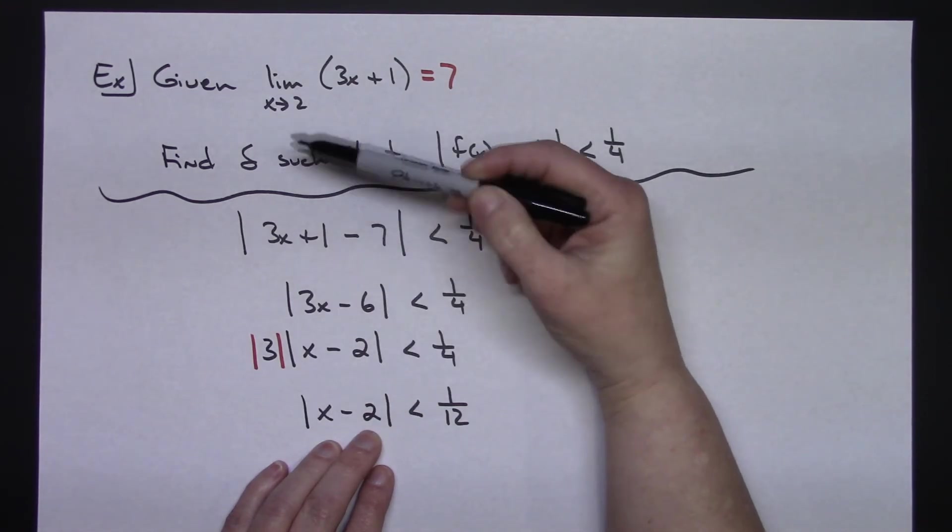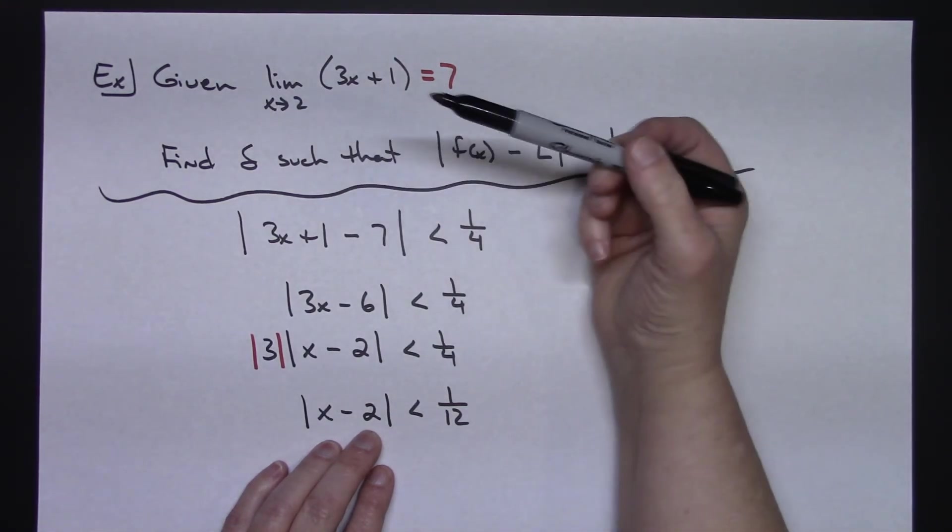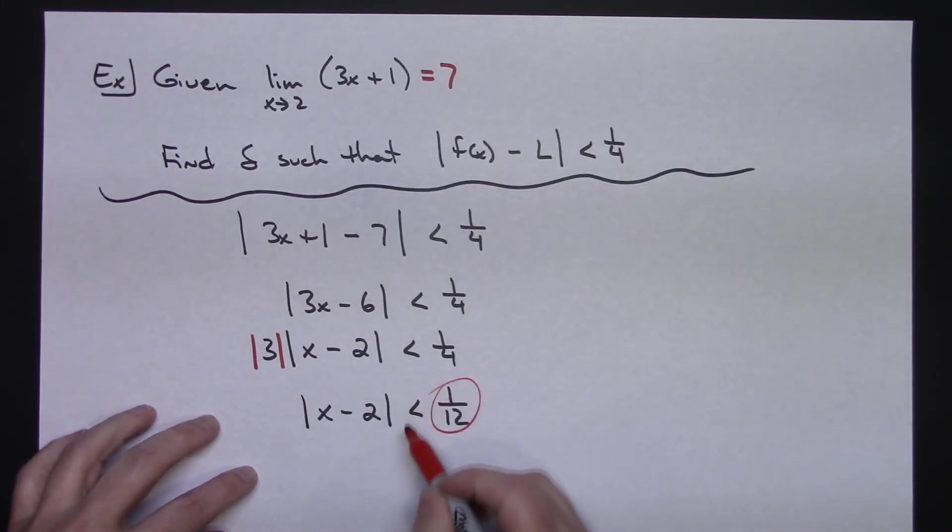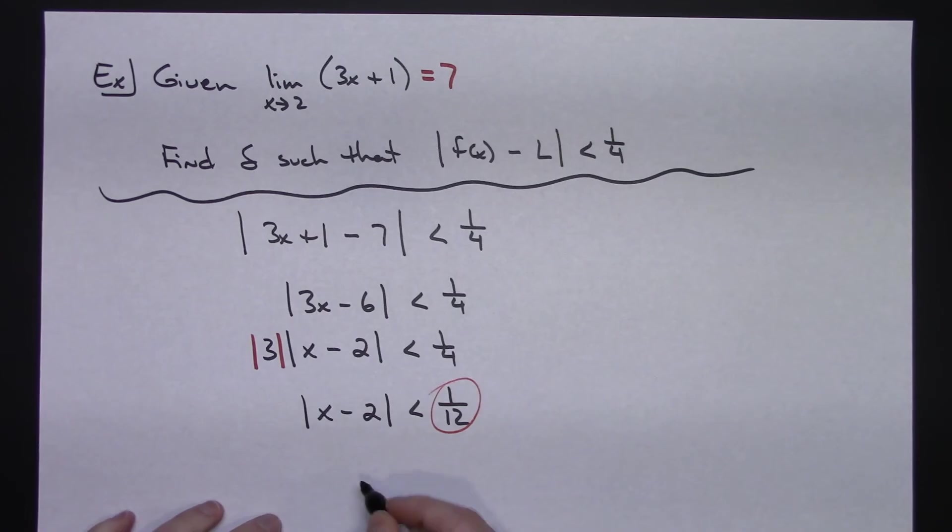So x minus 2, and then x is approaching 2 right there. So I can conclude then that that is my delta value that I need to find. So delta is equal to 1 12th in this scenario.